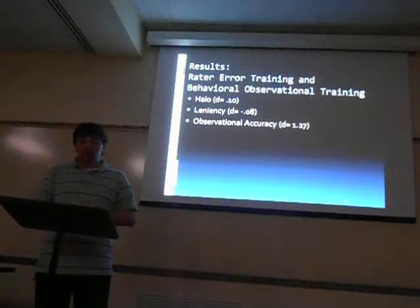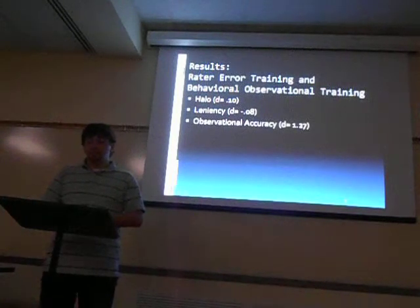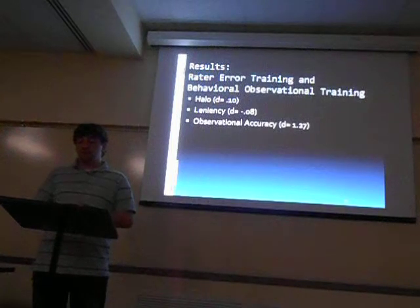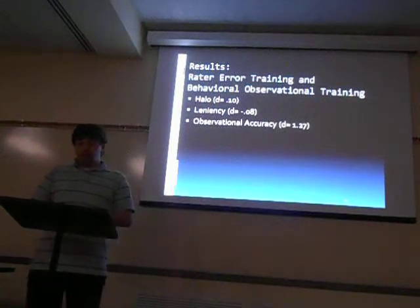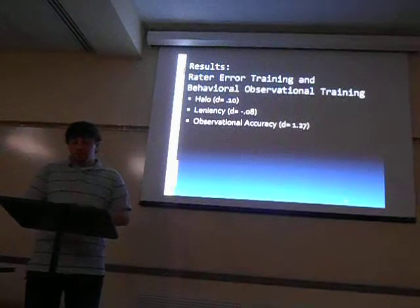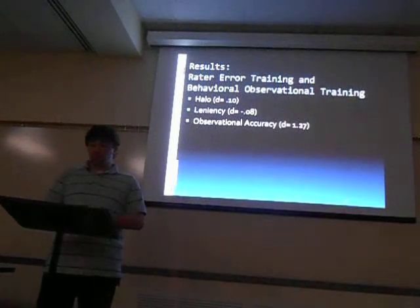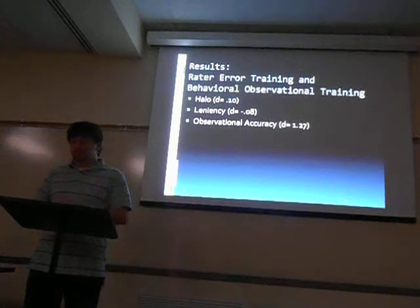Rater error training in combination with behavioral observation training revealed a small effect size of 0.10 for reducing halo errors and a small negative effect size of 0.08 for leniency errors, while also showing a large effect size of 1.27 for increasing observational accuracy. There were no data points available for rating accuracy.